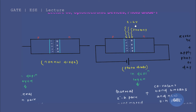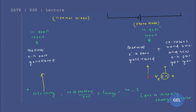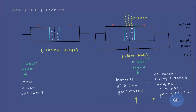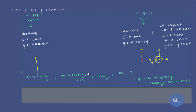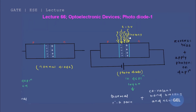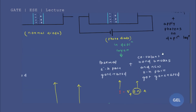If you increase the intensity of photons, that means the number of photons per unit time increases — the rate of photons increases. Due to this, energy gets enhanced, and if you have higher energy application of photons, more covalent bonds will break in the depletion layer, resulting in generation of a lot of electron-hole pairs.